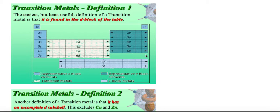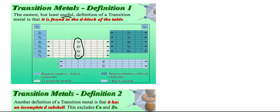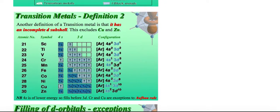The first definition is the easiest but also the least useful. Students love this definition because it's easy: a transition metal is a metal found on the D block. However, it is not entirely true, because even though some elements are found on the D block, they may not qualify as a transition metal. We'll look at that in a bit.